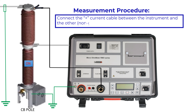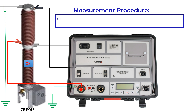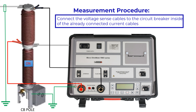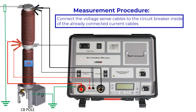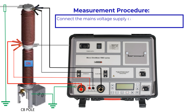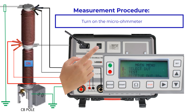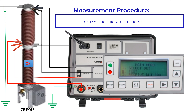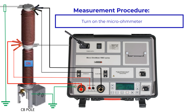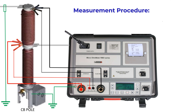Connect the flat current cable between the instrument and the other non-grounded side of the circuit breaker. Integrate the voltage sensor cables to the circuit breaker connector, inside of the already connected current cables. Connect the main voltage supply cable first to the micro-ohm meter, then to the supply source. Turn on the ohm meter. The test is now completed — watch the result.